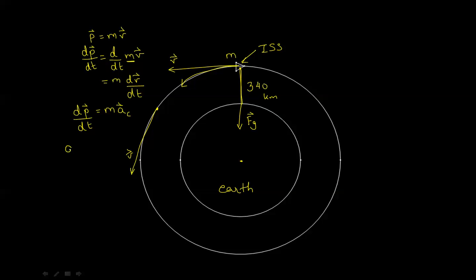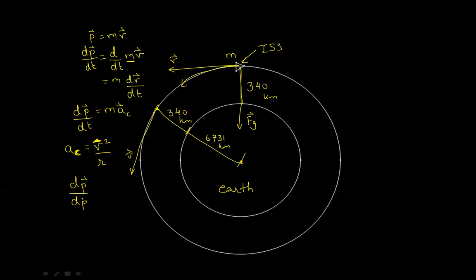From kinematics, centripetal acceleration is the magnitude of the velocity divided by the radius of the circular motion. Here, the radius of the circular motion is the altitude plus the radius of the Earth: 340 kilometers plus 6,371 kilometers. Substituting everything back, the change of momentum over time is equal to mass times velocity squared divided by the radius of the circular motion.